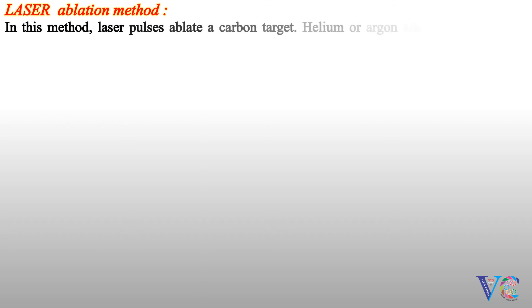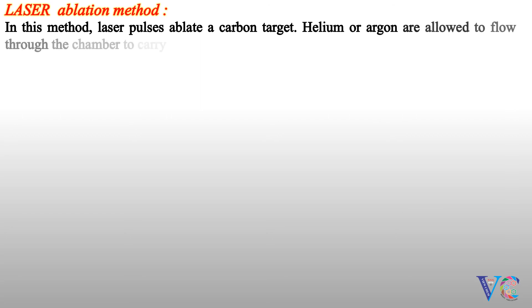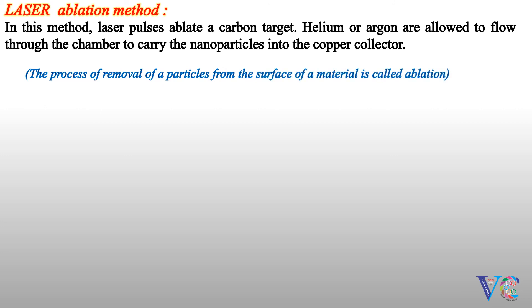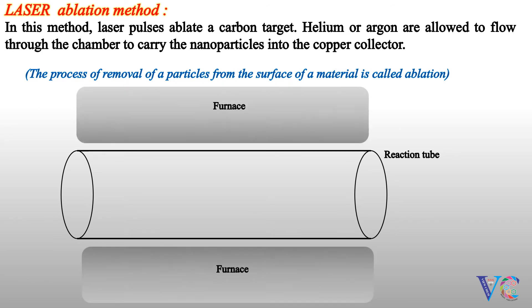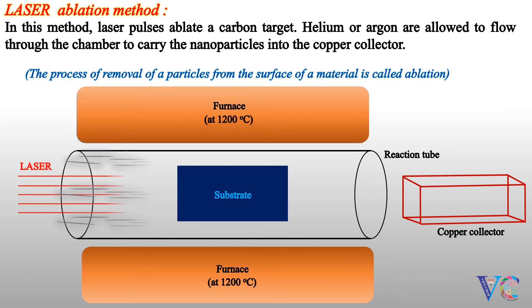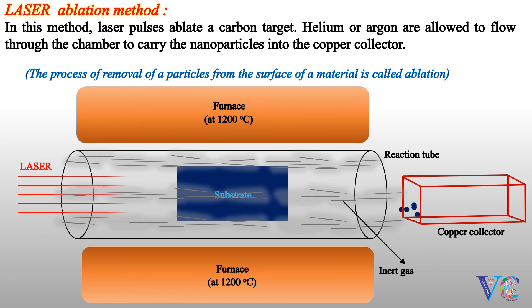In the laser ablation method, laser pulses ablate a carbon target. Helium or argon are allowed to flow through the chamber to carry the nanoparticles into the copper collector. Ablation refers to the removal of particles from the surface of a material. The furnace is heated to 1200 degrees centigrade, the laser hits the substrate, and nanoparticles come out from the substrate. Inert gases are passed through the reaction tube to carry the nanoparticles into the copper collector.